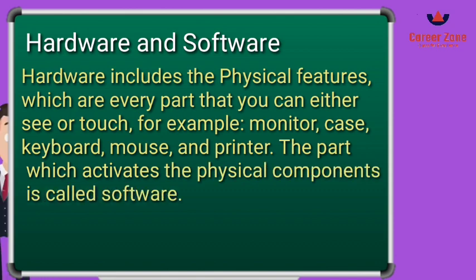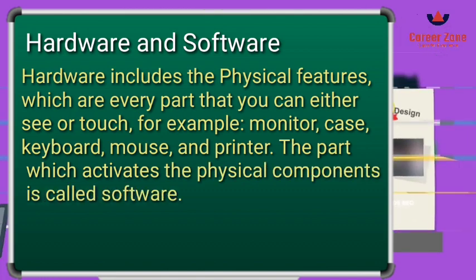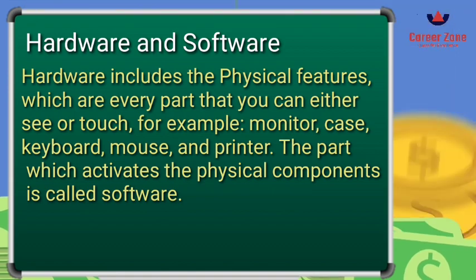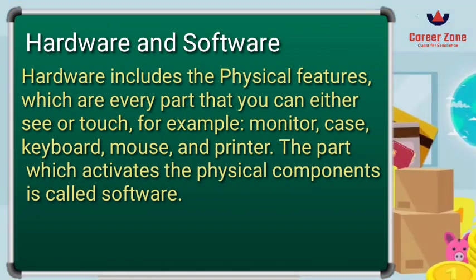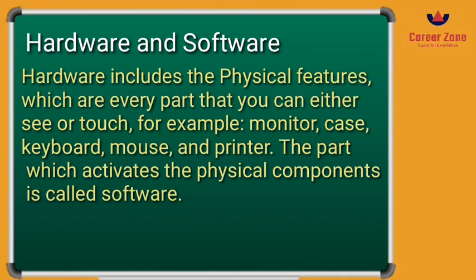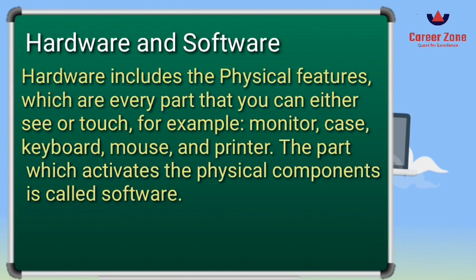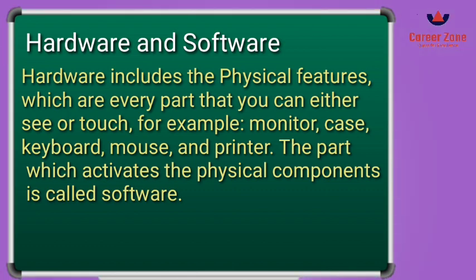Hardware are the physical, tangible components of the computer which you can see and touch — like monitor, keyboard, mouse, and printer. Software are the logical parts of the computer which activate the physical parts to work. With the help of software only, we can work with the hardware devices of the computer. Now let us look at the different types of hardware and software available.